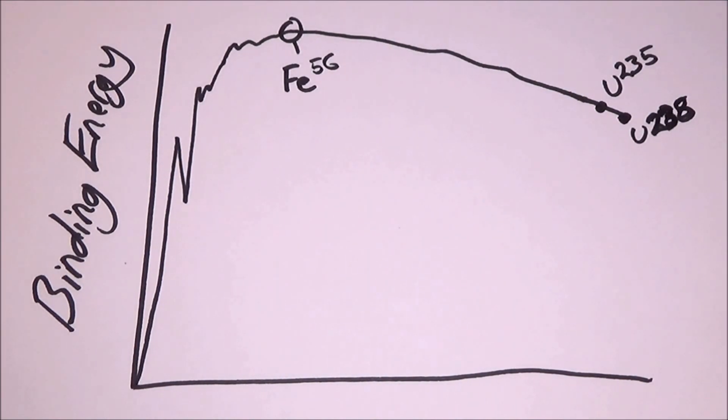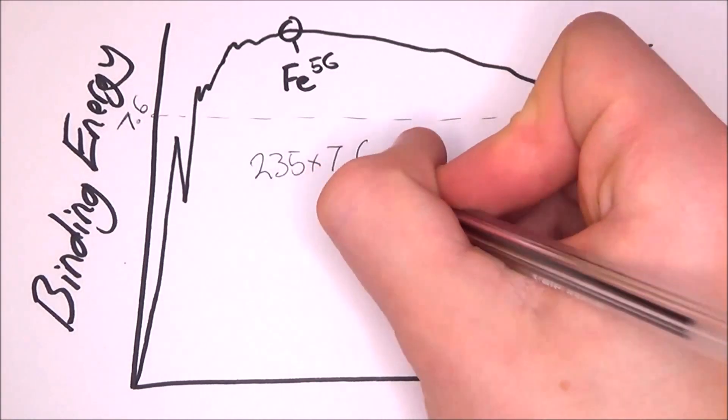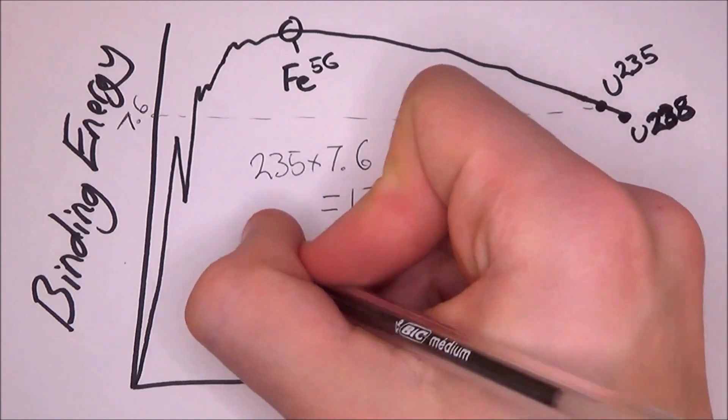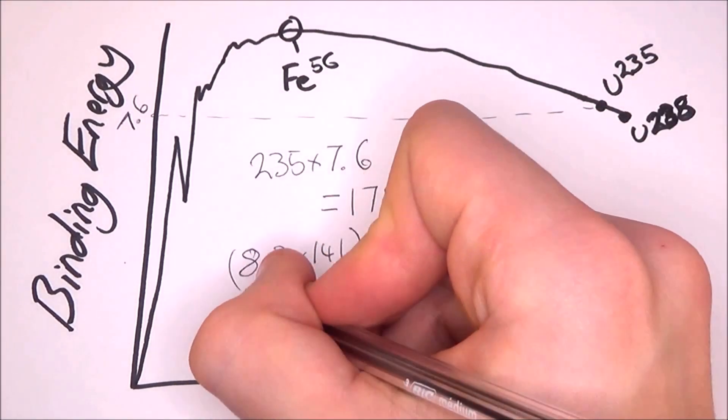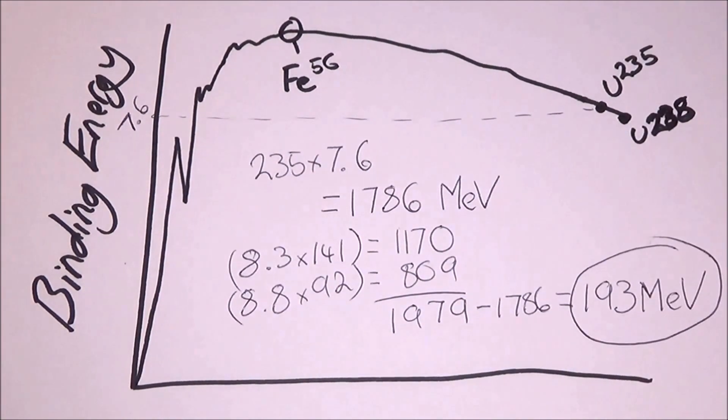Now if we take the binding energy of uranium-235, which is 7.6 mega electron volts, we can then times the amount of protons and neutrons in the atom together to get the energy from this atom, which is about 1786 mega electron volts. If we then split uranium-235 into barium-141 and krypton-92, then we'll have 8.3 times 141, which is 1170, and 8.8 times 92, which is 809. We can then add these together and see how much extra energy we get. Turns out we get 1,979 mega electron volts. That is a difference of 193 mega electron volts in a perfect environment.